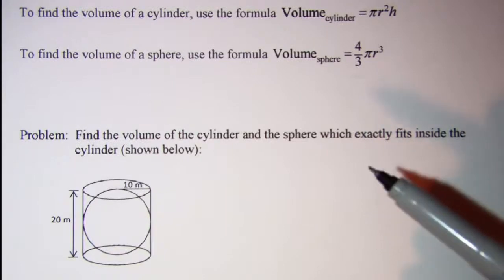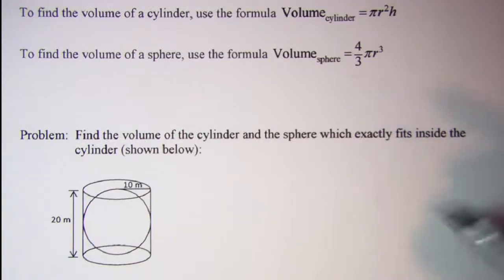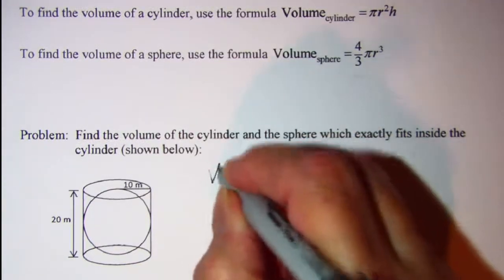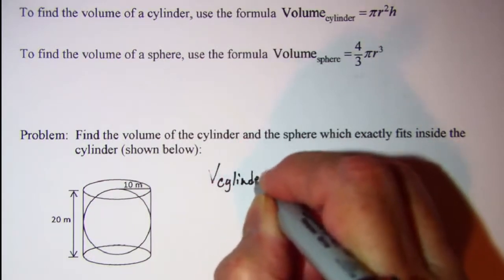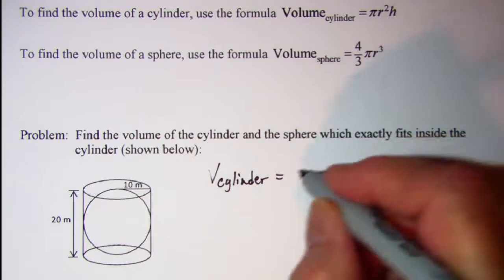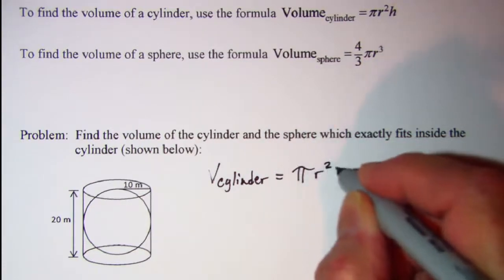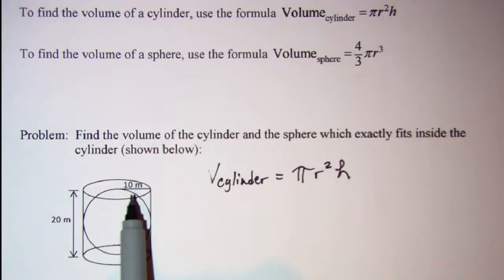So we want to find the volume of the cylinder and the volume of the sphere. So the volume of our cylinder, we're going to use the formula pi r squared h. We know that r is 10 for the cylinder.